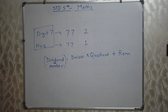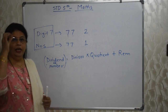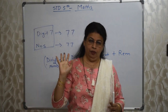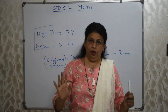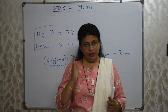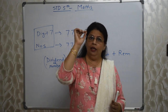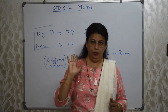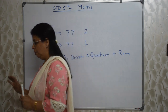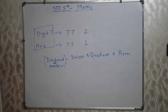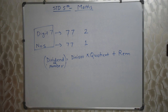Decimal fractions — the rule is very easy and simple. Decimal ke niche decimal — that is the only rule. When we add or subtract decimal fractions, the decimal point should be below each other, otherwise your answer will go wrong. How to convert vulgar fractions to decimal fractions and vice versa is covered in our videos.